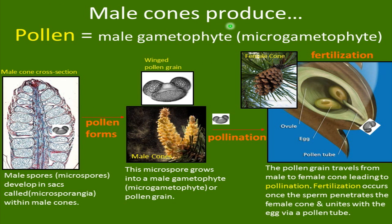What do the male cones produce? They make pollen — that's the male gametophyte, the microgametophyte. Remember, it's not just a sperm; there's more to it than that. The male spores or microspores develop in sacs called microsporangia within male cones. Then pollen forms and comes off the male cones. The microspore grows into a male gametophyte or pollen grain, and these have wings that are able to be carried in the wind.